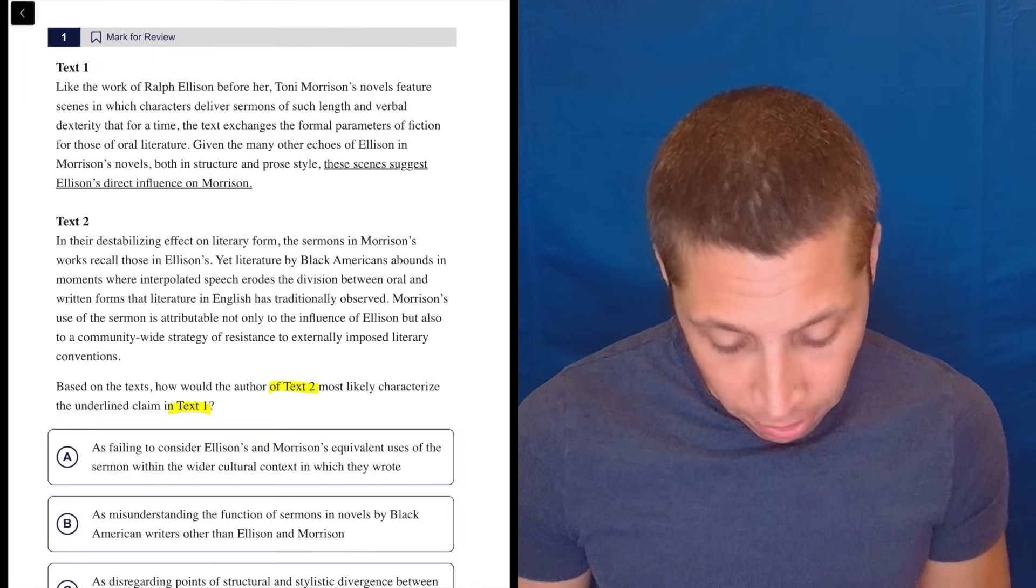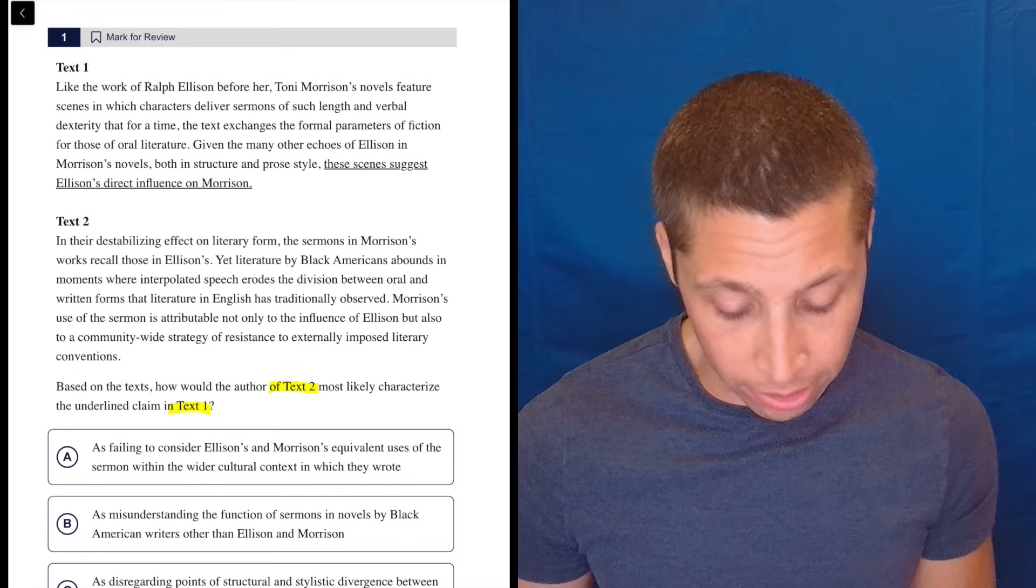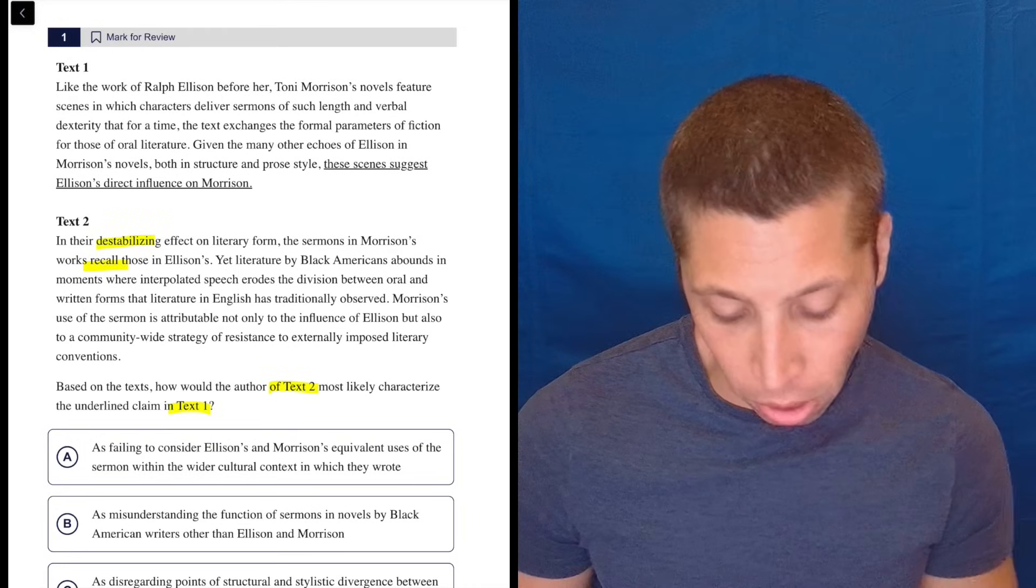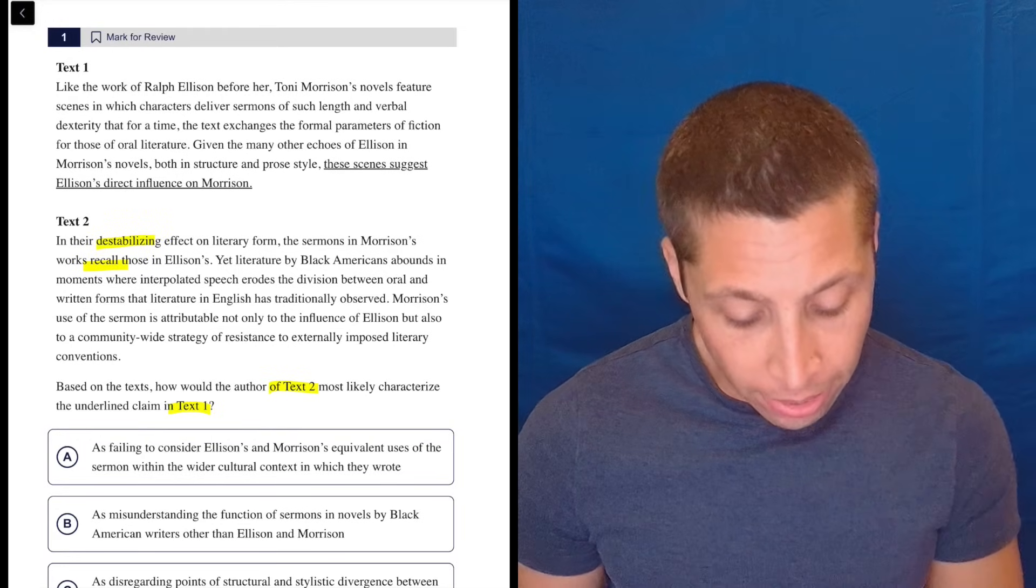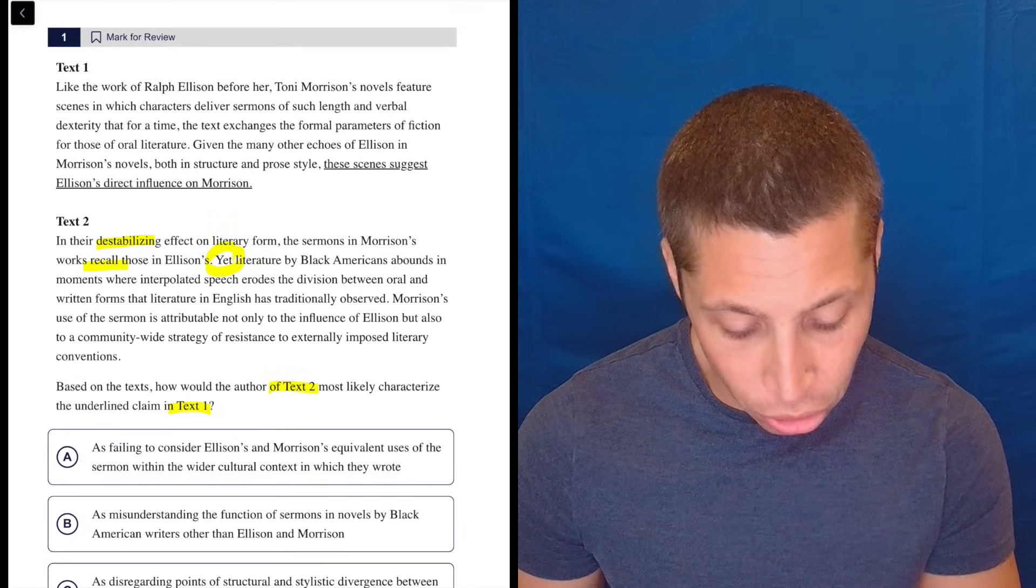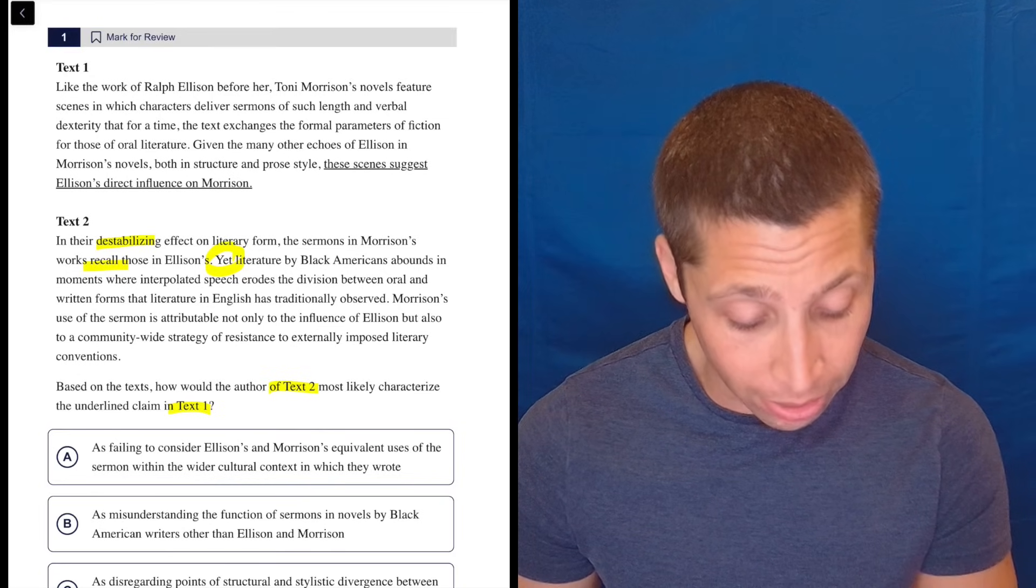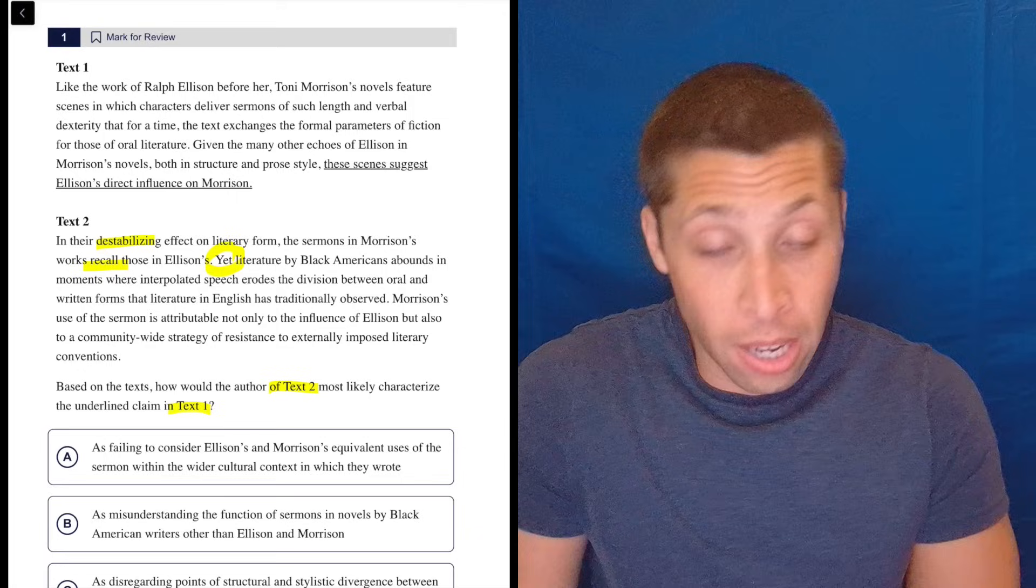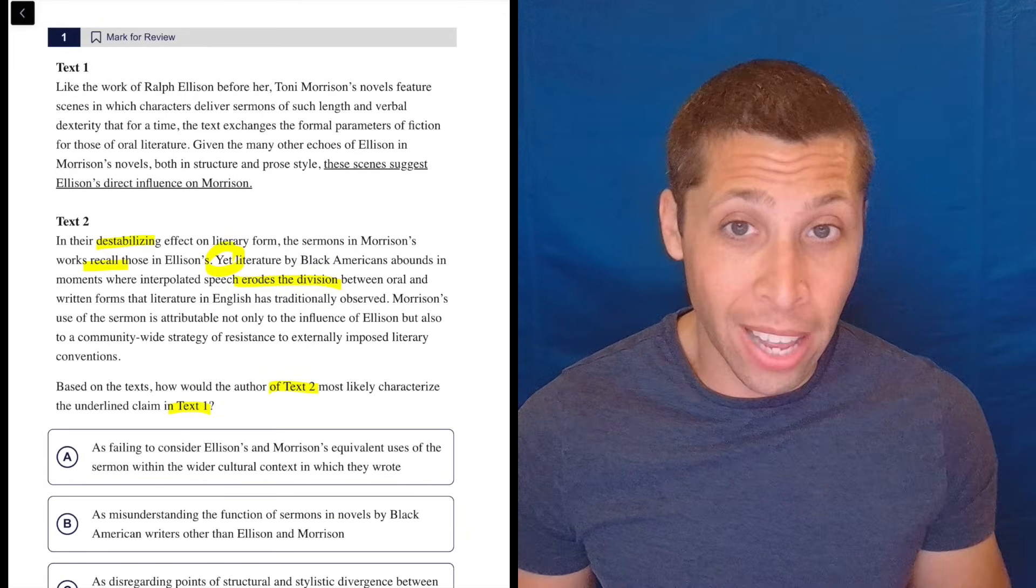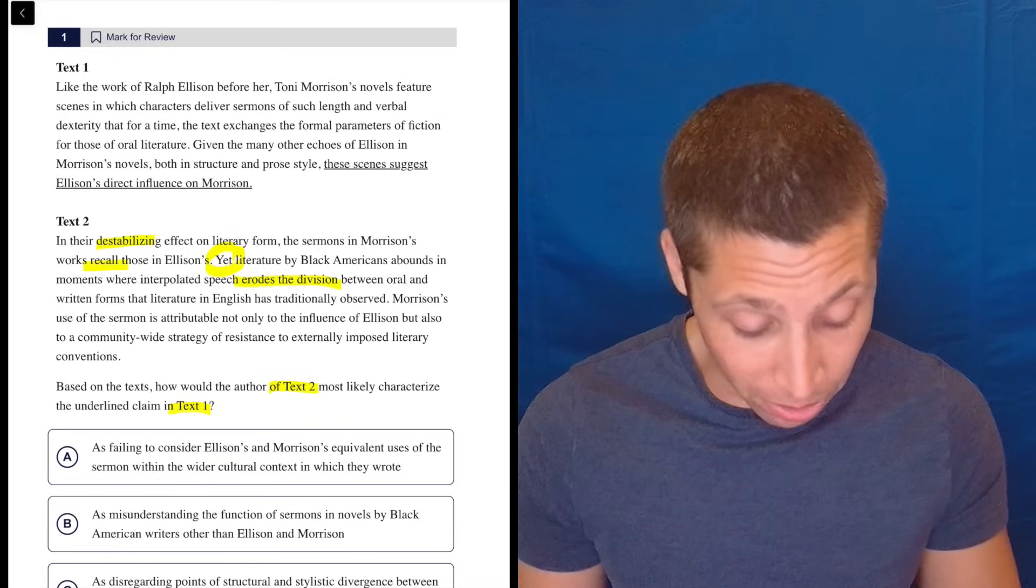Text two, in their destabilizing effect on literary form, the sermons in Morrison's works recall those in Ellison. So there's something similar between those two. And destabilizing is strong too, that sounds bad. Yet, literature by black Americans abounds in moments where interpolated speech erodes the division between oral and written forms that literature in English has traditionally observed. So that's a hard sentence, but eroding the division? I kind of understand that. Something that's normally separated is not separated anymore.